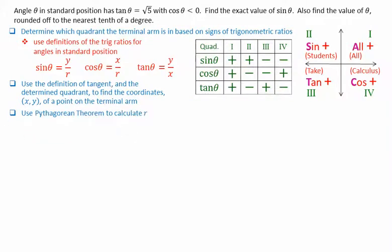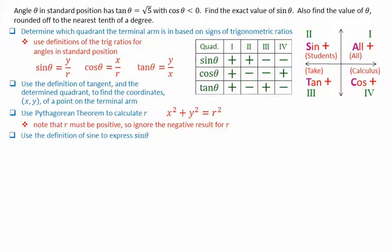We can use Pythagorean theorem then to calculate r. x squared plus y squared equals r squared. Note that r must be positive, so we will ignore the negative result for r. We can then use the definition of sine to express sine theta using values for y and r.